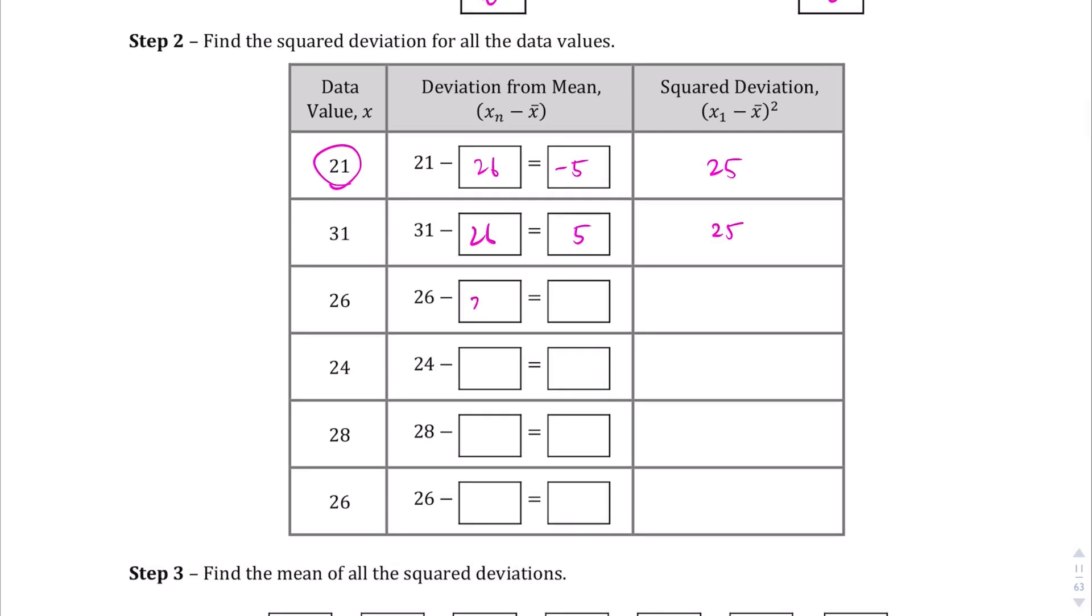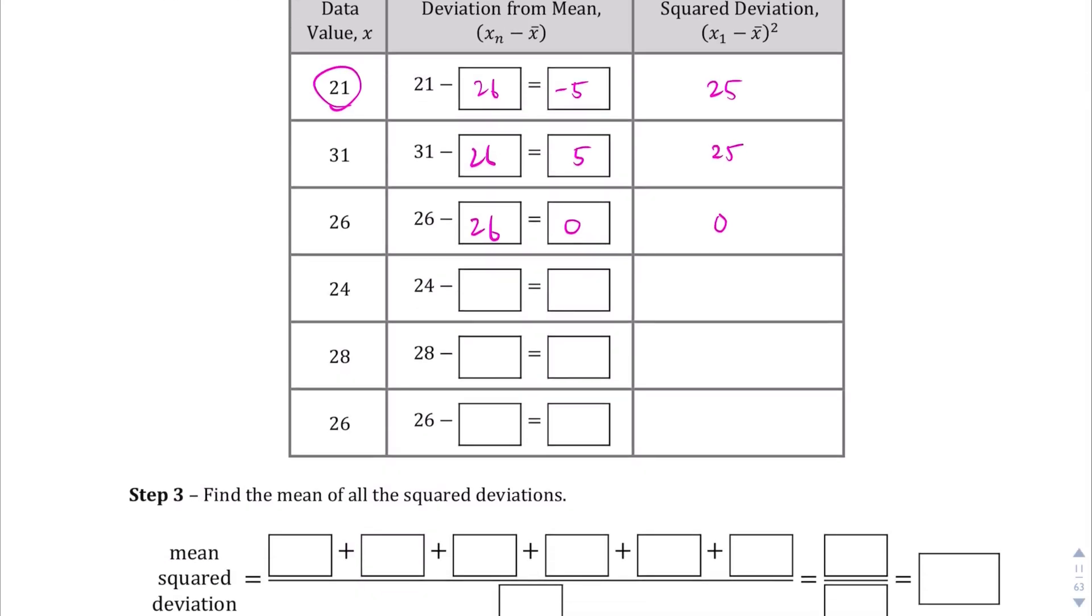Let's keep going with that. 26 minus 26 gives us 0. 0 squared gives us 0. And then, 24 minus 26 gives us negative 2. Negative 2 squared gives us positive 4. 28 minus 26 equals 2. 2 squared equals 4 as well. 26 minus 26 equals 0. 0 squared equals 0.